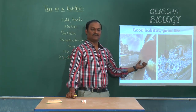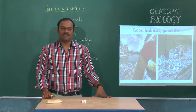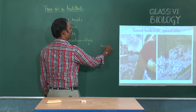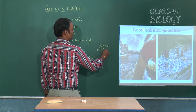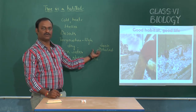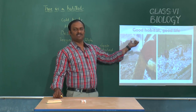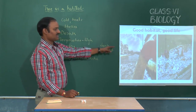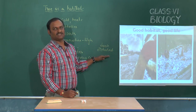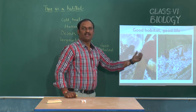A good habitat is responsible for a good life. For example, if a door in our house is broken, we feel disturbed. Similarly, when habitats are destroyed by human beings, all the animals living in those particular habitats get disturbed, their lives get disturbed, and this results in the death of different organisms.